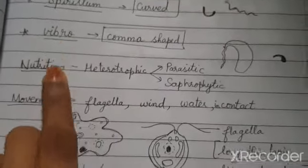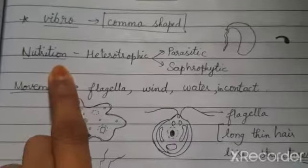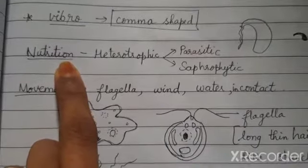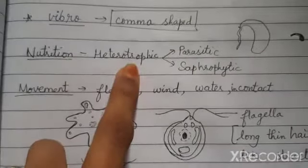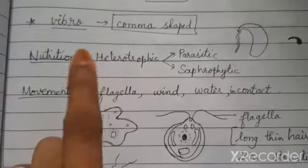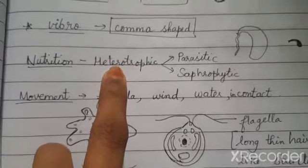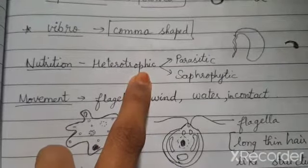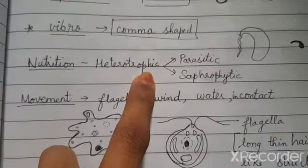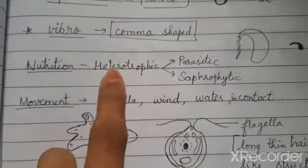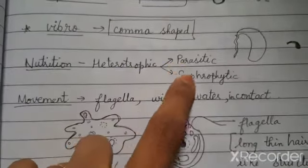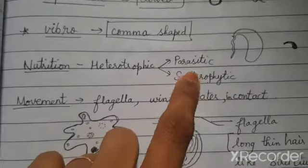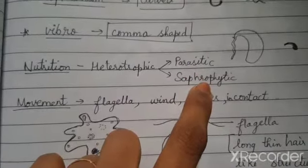Regarding nutrition, the majority of microorganisms are heterotrophic, except algae, which are autotrophs. Heterotrophic microorganisms are either parasitic — needing a host — or saprotrophic — living on dead decaying organic matter.